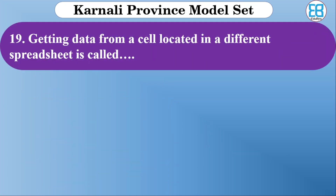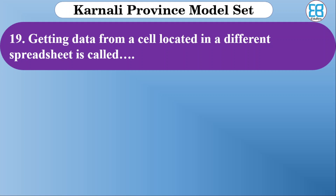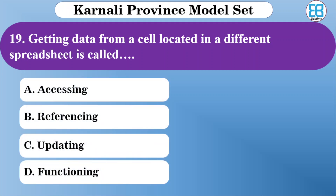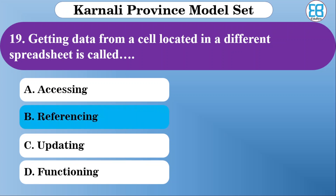Getting data from cells located in different sheets or different cities — what is it called? The options are accessing, differencing, updating, and referencing. The correct option is referencing.